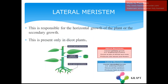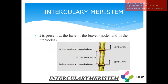Lateral meristem is responsible for the horizontal growth of the plants. This is also known as secondary growth and is present only in dicot plants. Apical meristem causes primary growth, which is the vertical growth of the plants, whereas lateral meristem causes secondary growth, which is the horizontal growth.